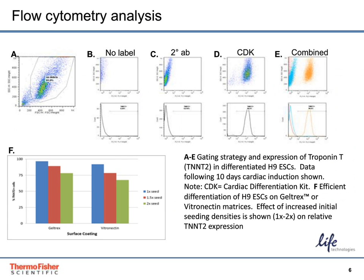Here we show cardiomyocytes characterized following differentiation using the PSC Cardiomyocyte Differentiation Kit. Graphs A through E show the gating strategy and TNNT2 expression in H9 ESCs following 10 days of cardiac differentiation. Graph F shows the efficient differentiation of these ESCs on Geltrex or Vitronectin matrices and the effect of seeding densities on relative TNNT2 expression. At the 1X recommended seed density using either Vitronectin or Geltrex, you achieve upwards of 90% TNNT2 expression in your culture.